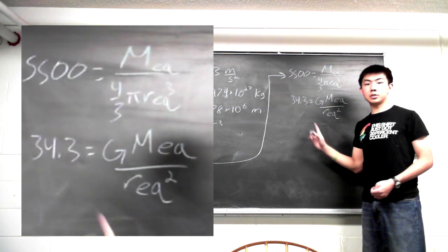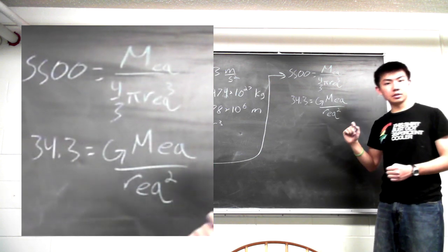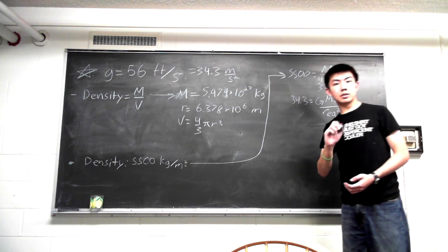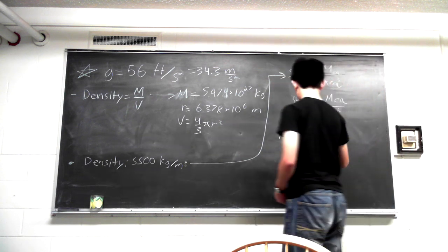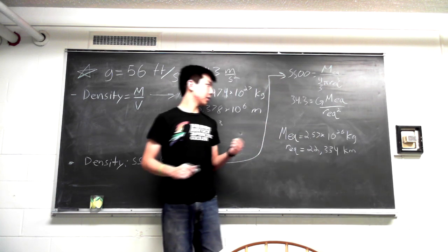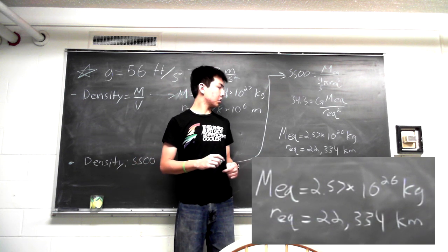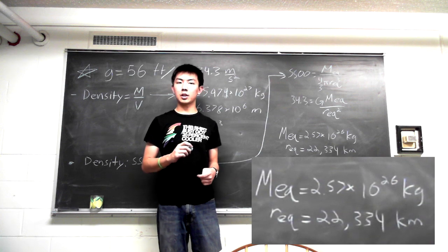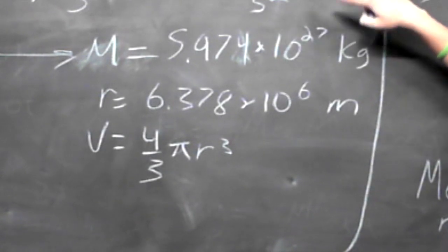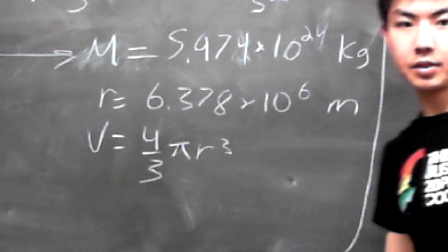Now that we've got two equations with two unknowns, we can go ahead and just solve for the mass and the radius of Equestria. If we calculate that out, we get that Equestria has a mass of 2.57 times 10 to the 26th kilograms and a radius of about 22,334 kilometers. And one more thing before I go on, I accidentally made a mistake right here, it should be 10 to the 24th.